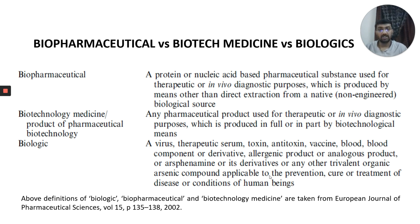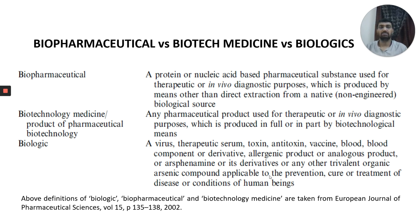Last but not least are biologicals. Normally viruses, therapeutic serums, toxins, antitoxins, vaccines, blood, blood components, blood plasma, derivatives, allergenic products, or analogous products which are derived from other things and could be applied for prevention, cure, or treatment of diseases in human beings could be classified as biologicals — such as coagulation factors and similar things.